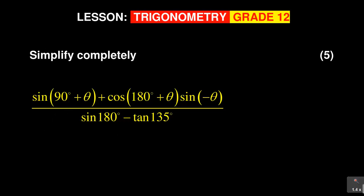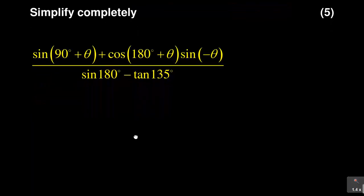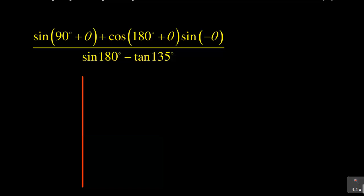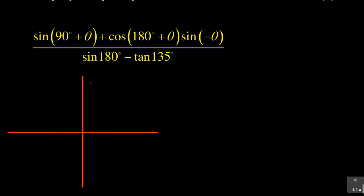I'm going to be answering this with the CAST diagram, so let me draw the CAST diagram here. This will be just a quick sketch, because in an exam, you don't have all the time to be sketching — you need to quickly sketch the CAST diagram and get done with it. So what you have here is your 0 degrees, this is your 90 degrees, this is your 180 degrees, this is your 270 degrees, and it's 360 degrees.